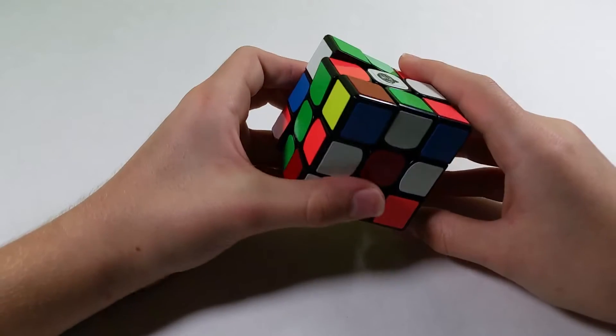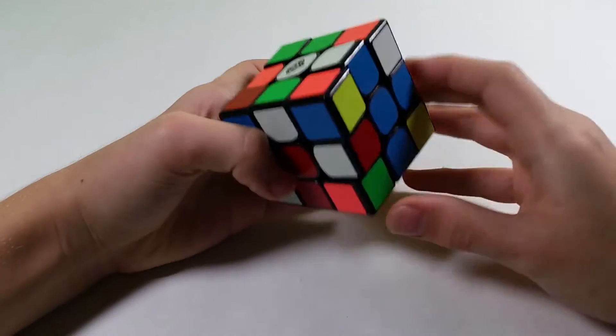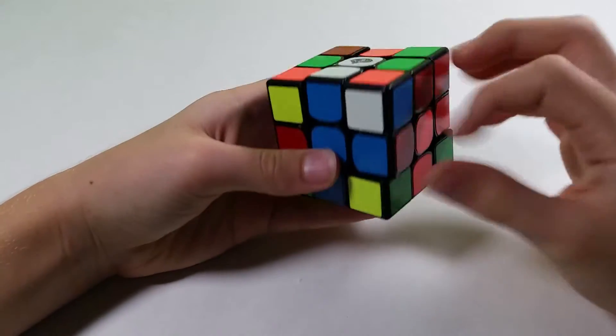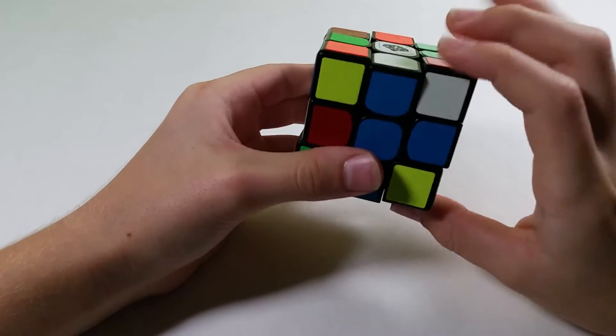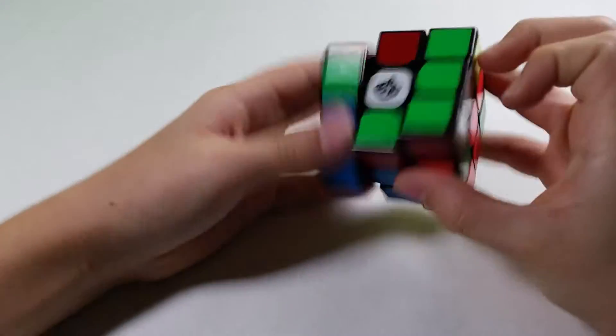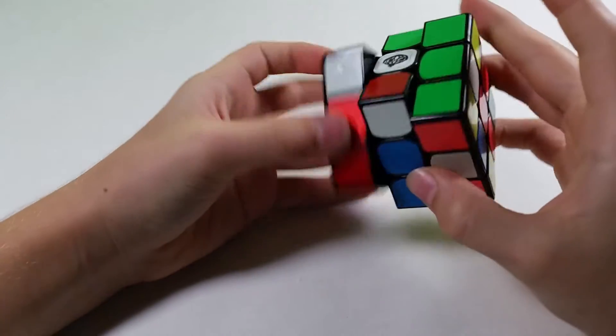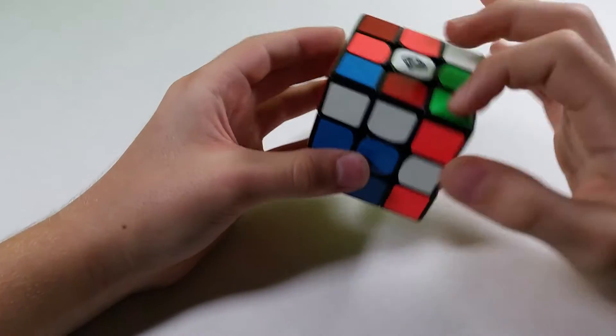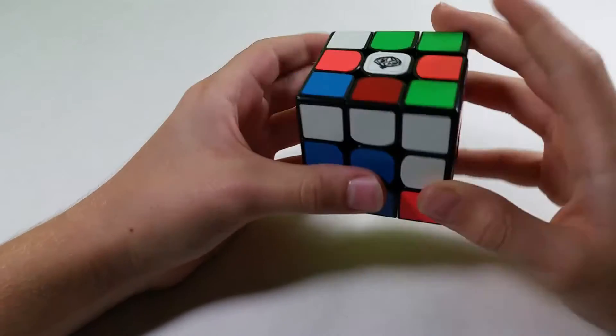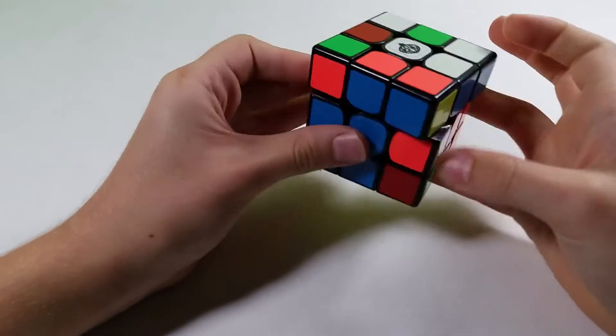First pair I see, I'd probably go with these two over here. So I solve it like this, then I have these two, these two here, I can just insert really easily, and then these two.